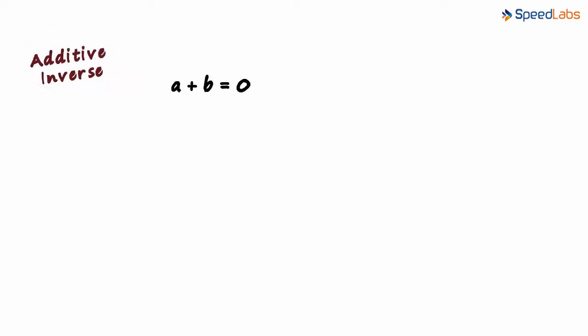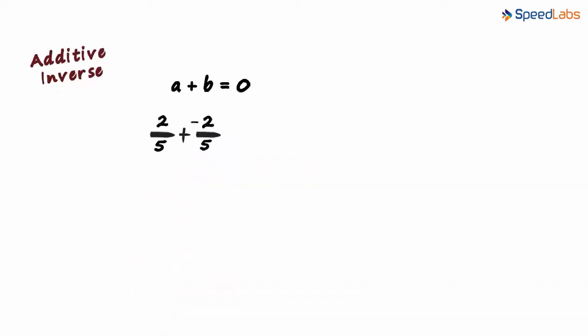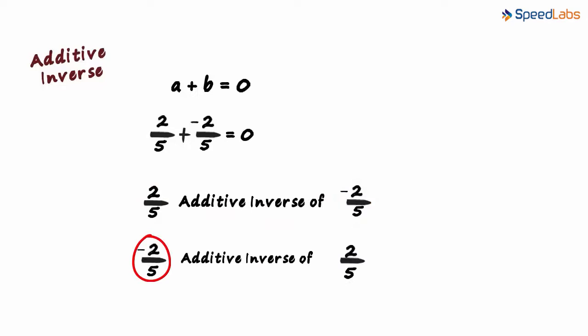Let's look at numbers now. So if 2 by 5 plus minus 2 by 5 equals zero, then 2 by 5 is the additive inverse of minus 2 by 5. And minus 2 by 5 is the additive inverse of 2 by 5.